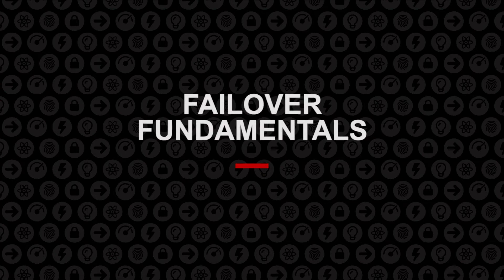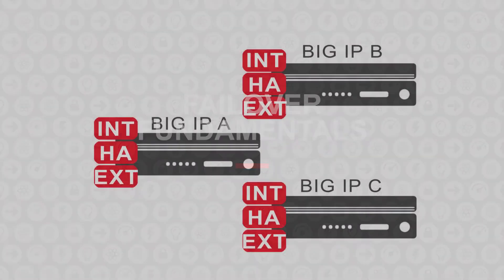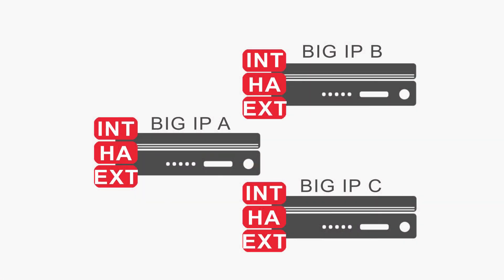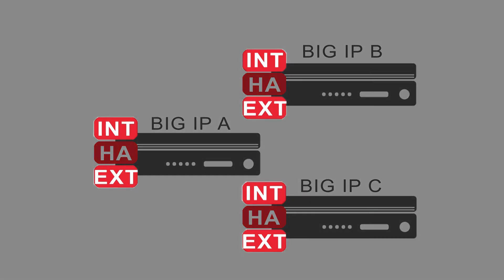This video gives an introduction on how failover works within a sync failover device group. Here we see three standalone BIG-IP devices that are not yet in a device group. Each one contains the three VLANs created during initial setup: the standard VLANs external and internal, as well as VLAN-HA for high availability.